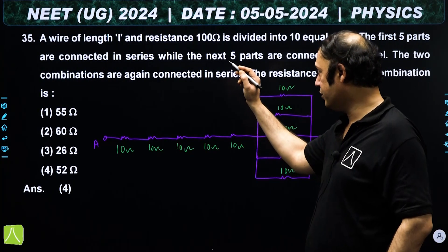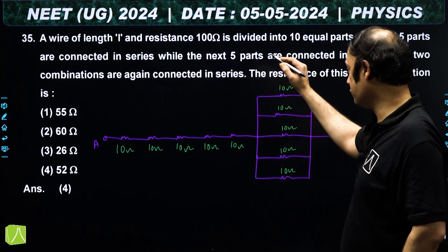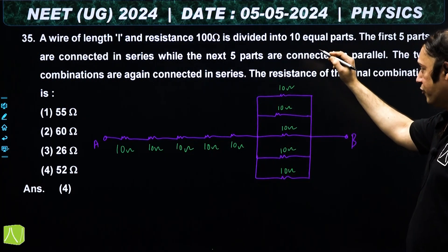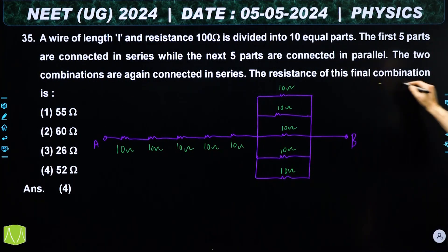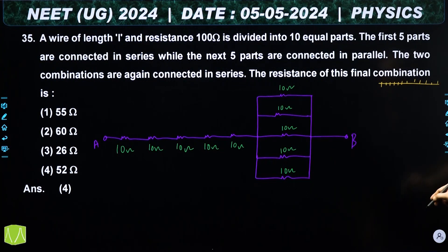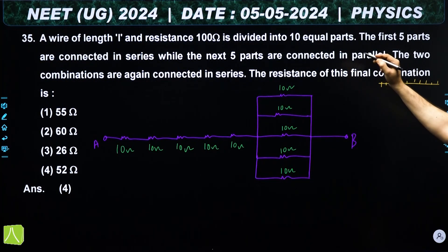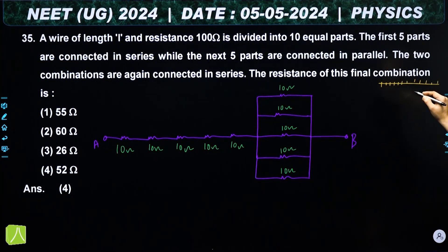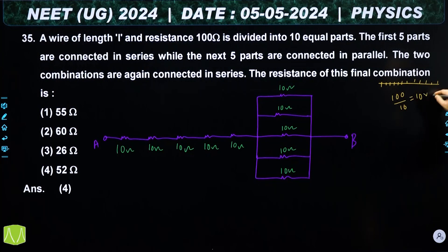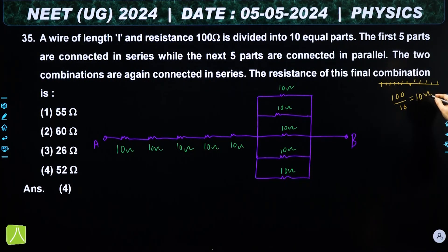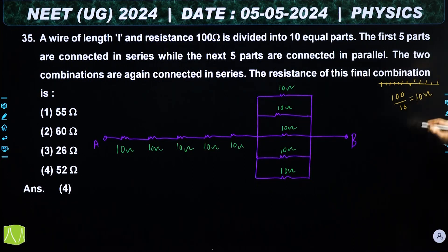Question number 35: a uniform wire has total resistance 100 ohm. It is cut into 10 equal parts. Each part has resistance 100/10 = 10 ohm.